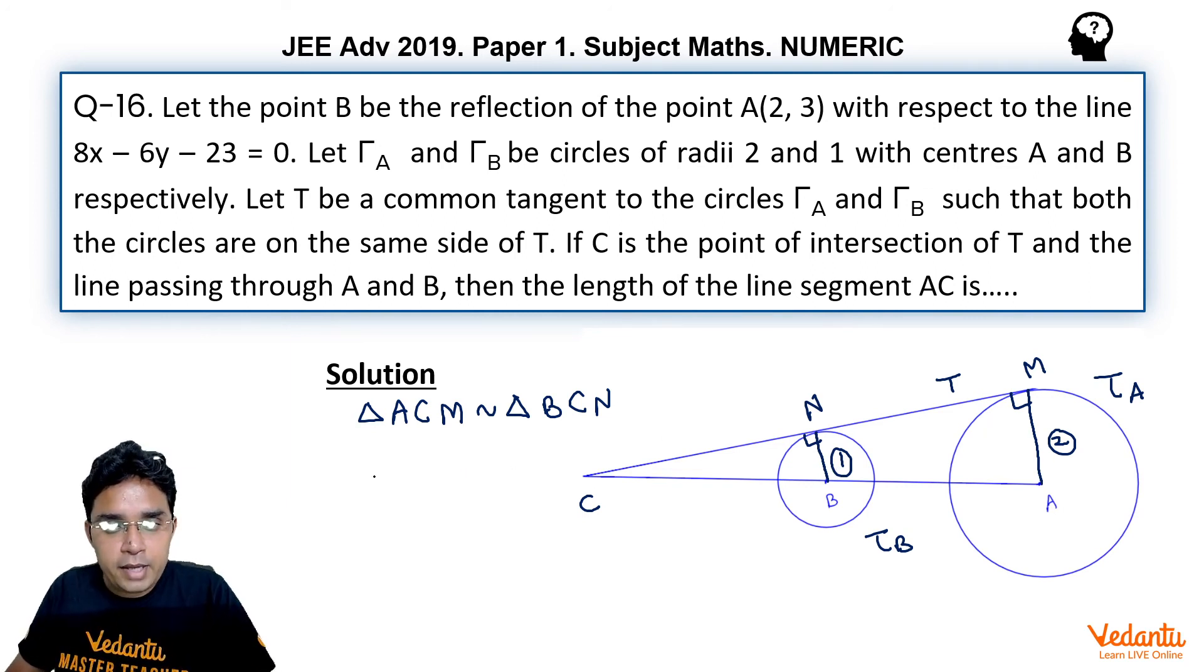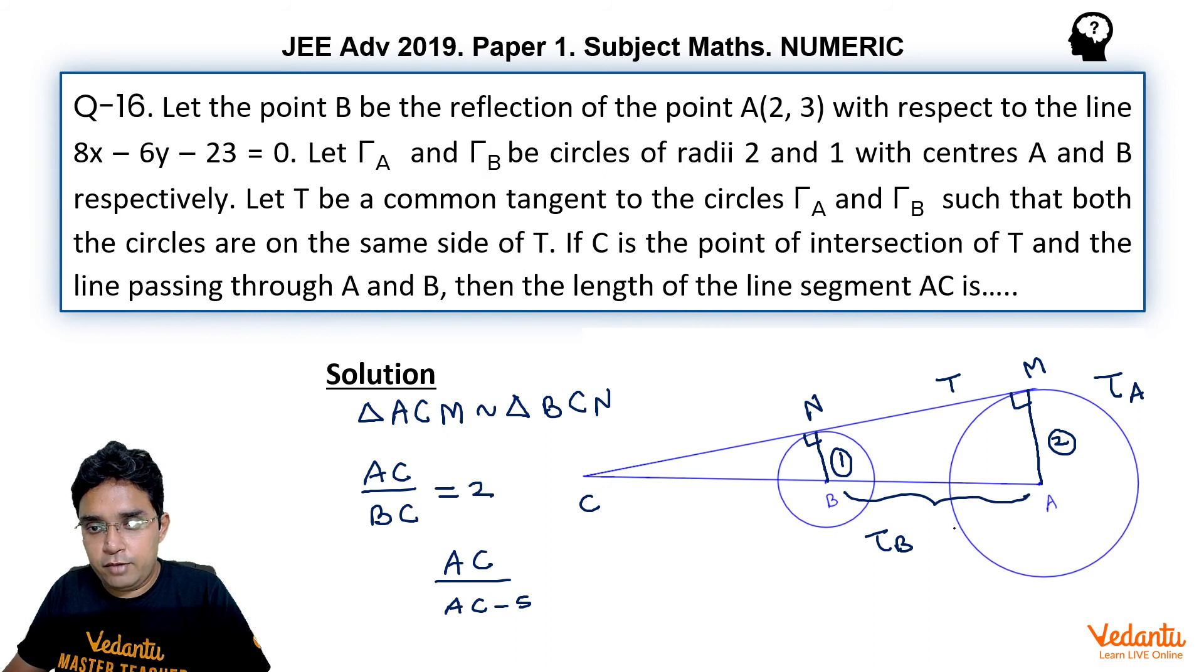So we can directly say AC upon BC would be equal to 2 and we need to find the length BC. Here BC can be written as AC minus 5 because this AB length is 5 we have found in previous slide this is equal to 2. So we get AC is equal to 2 AC minus 10 and this gives us AC is equal to 10.